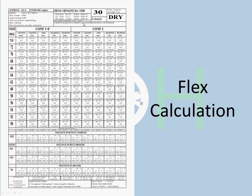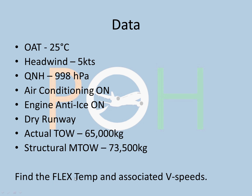From the chart, note down the elevation, ISA temperature, and the TREF that is on the bottom of the chart. Copy this data — this is what we are going to solve: OAT 25°C, headwind 5 knots, QNH 998, air conditioning on, engine anti-ice on, dry runway, actual takeoff weight 65,000 kg, structural MTOW 73,500 kg.